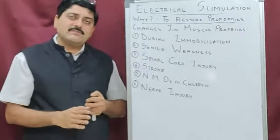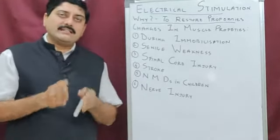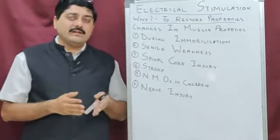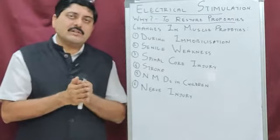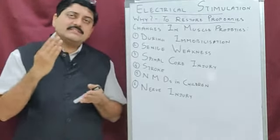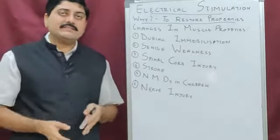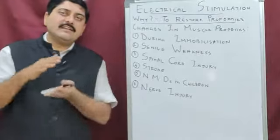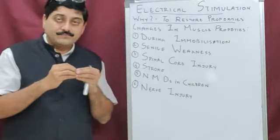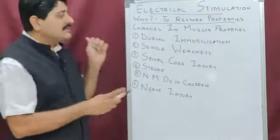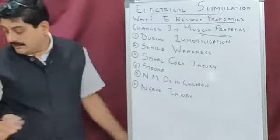The last cause is nerve injury. There are three types: neuropraxia, axonotmesis, and neurotmesis. Neurotmesis involves a complete cut of the nerve with the axon and myelin sheath, where electrical stimulation may not help. However, in neuropraxia — where there is transient compression on the nerve — or axonotmesis — where the axon sheath is intact but the nerve fiber is cut — electrical stimulation can help maintain muscle properties during the Wallerian degeneration and regeneration cycle.